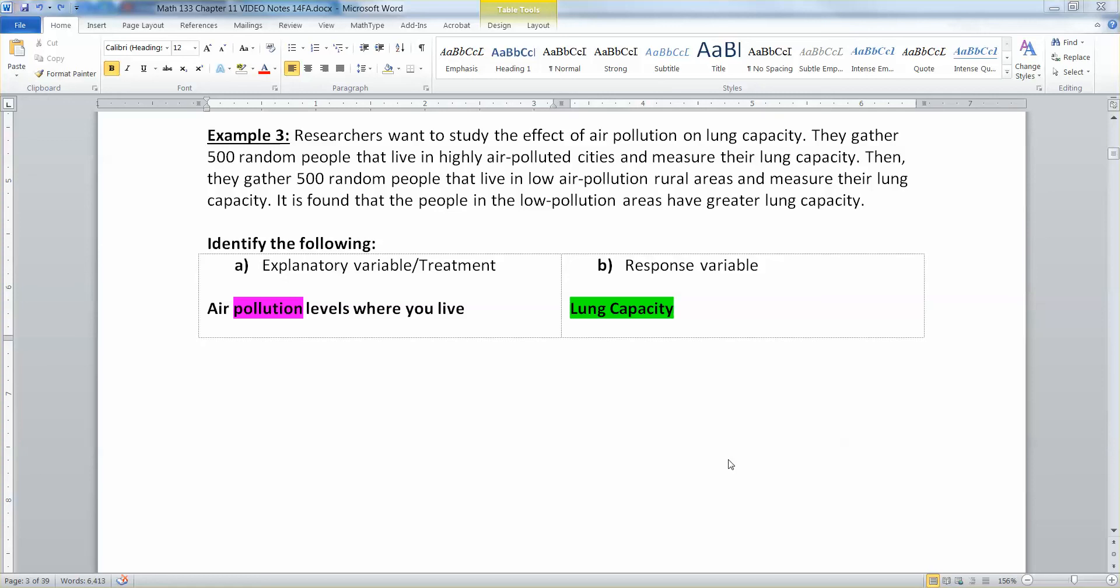For this next example, suppose researchers want to study the effect of air pollution on lung capacity. They gather 500 random people that live in highly polluted cities and measure their lung capacity. Then they gather 500 random people that live in low air pollution rural areas and measure their lung capacity. It is found that the people in the low pollution areas have a greater lung capacity.